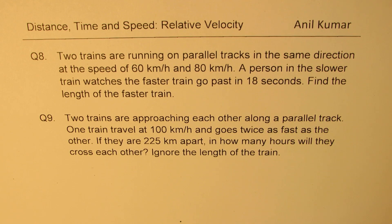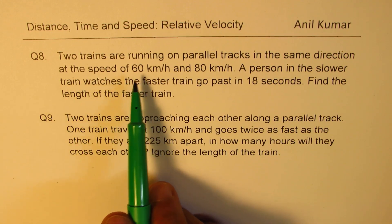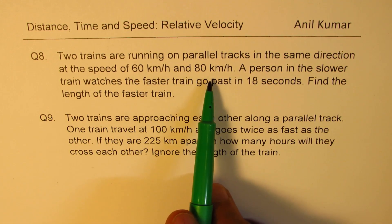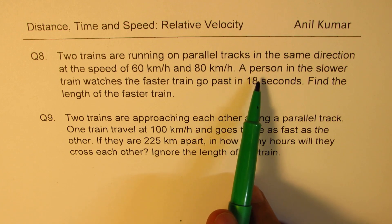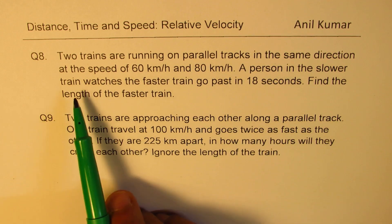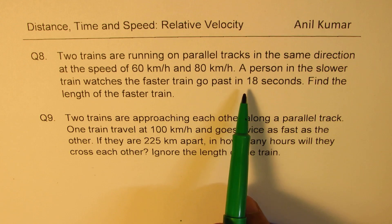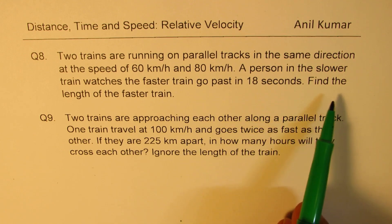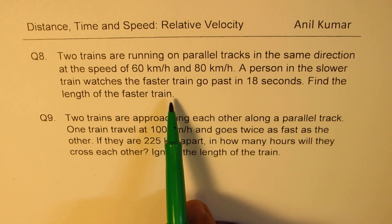We are considering examples where relative velocity is involved. Question number eight: two trains are running on parallel tracks in the same direction at the speed of 60 km per hour and 80 km per hour. A person in the slower train watches the faster train go past in 18 seconds. Find the length of the faster train.